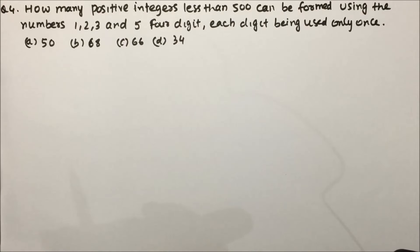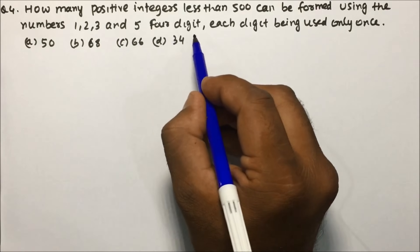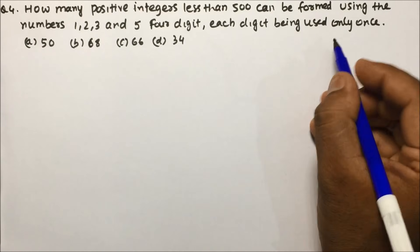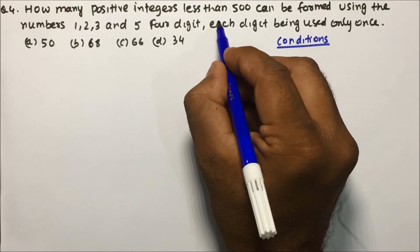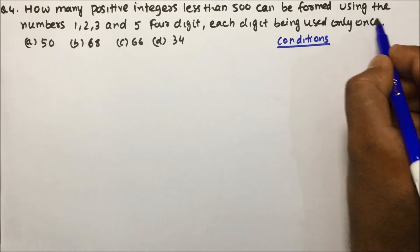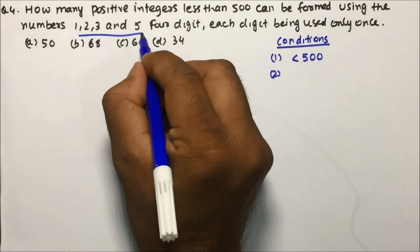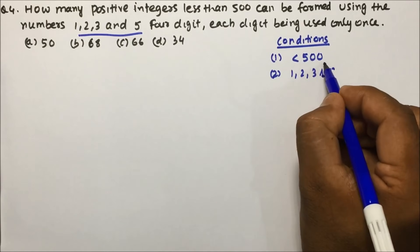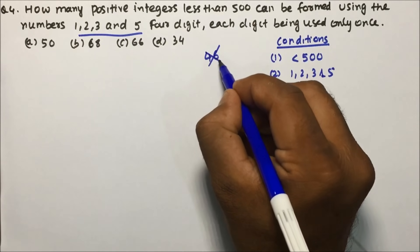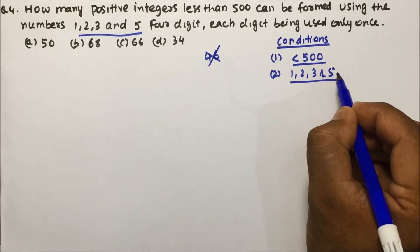Question number four is very important: how many positive integers less than 500 can be formed using the digits 1, 2, 3, and 5, with each digit used only once? The conditions are: all positive integers must be less than 500, use only the four digits 1, 2, 3, 5, and each digit used only once — so 55 is not allowed, but 53 is.